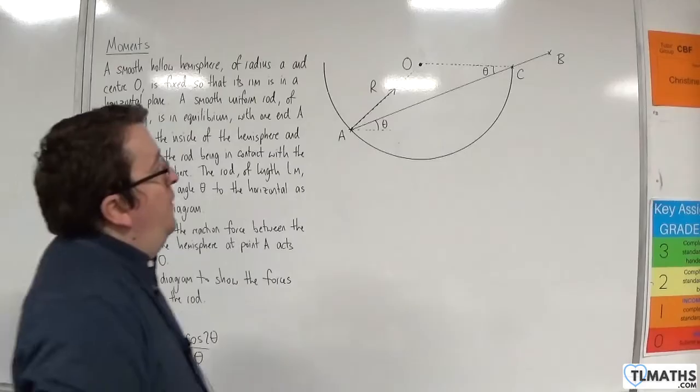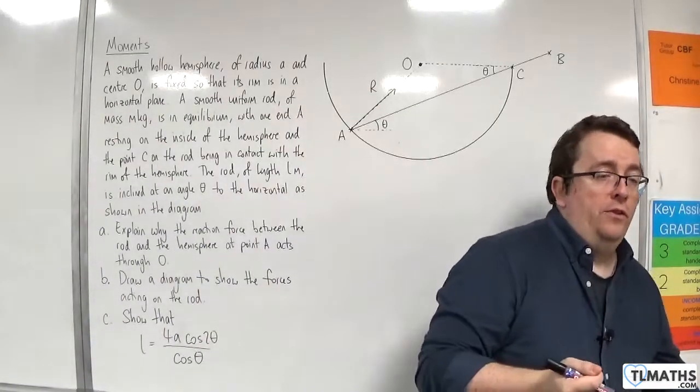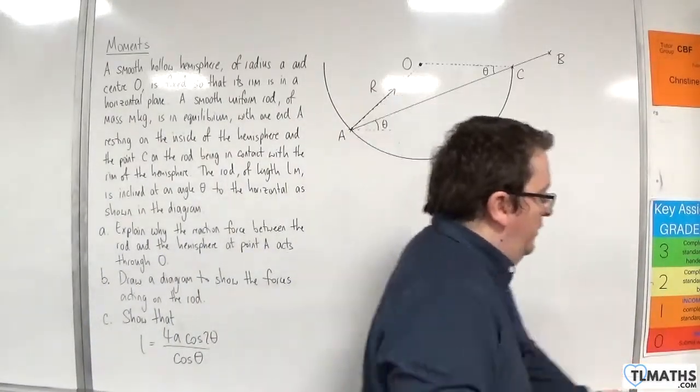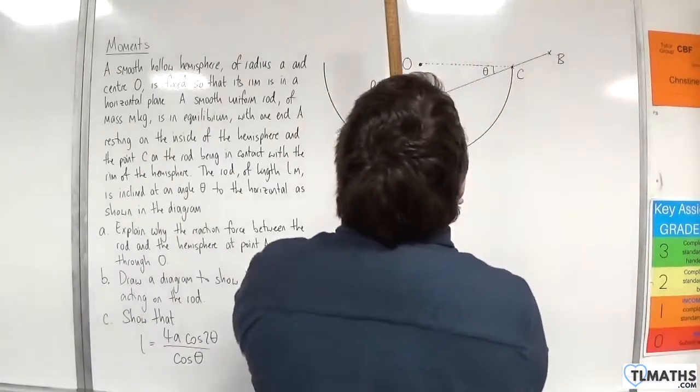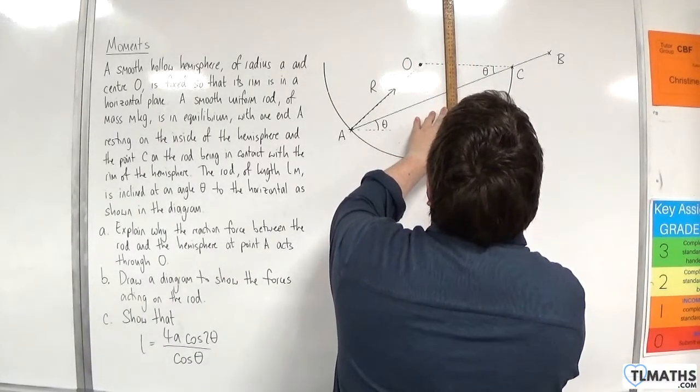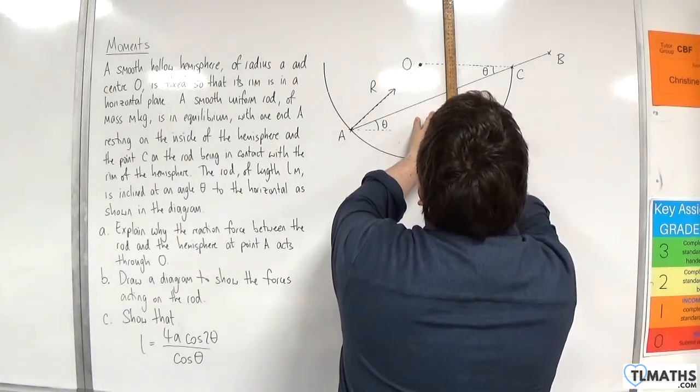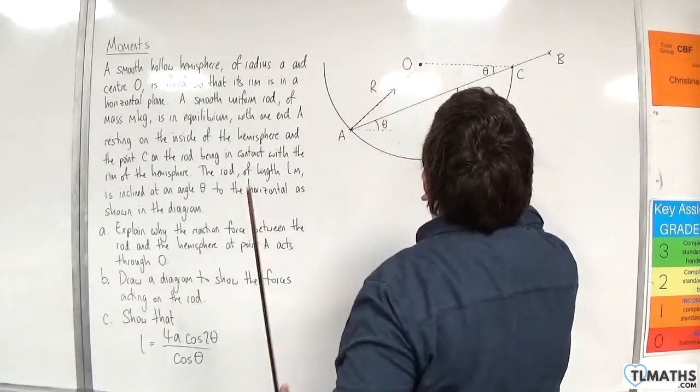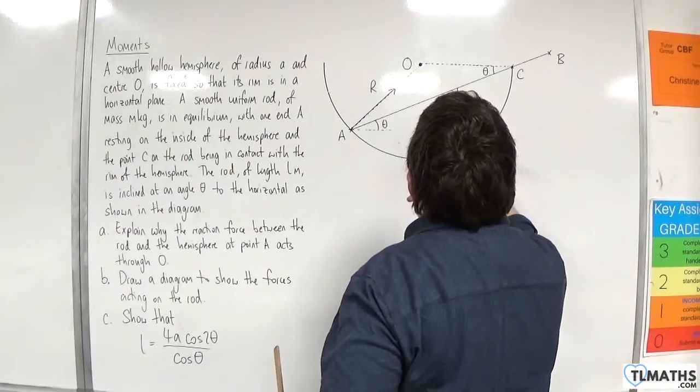We have the weight of the rod acting vertically downwards. So let's add that on somewhere there. And so that would be Mg.